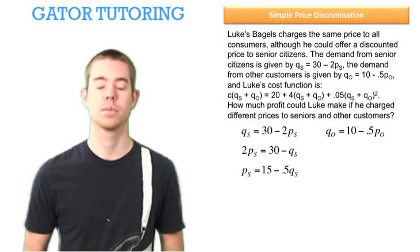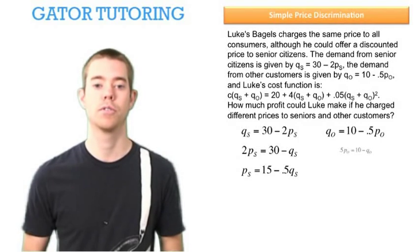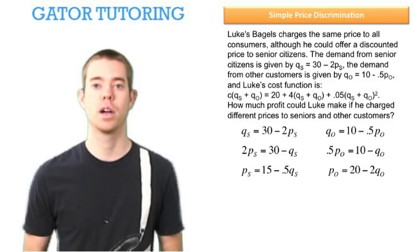Same thing for other customers. We add 0.5PO to each side, subtract QO from each side, then divide through by 0.5. We find that the price of other customers is PO = 20 - 2QO.